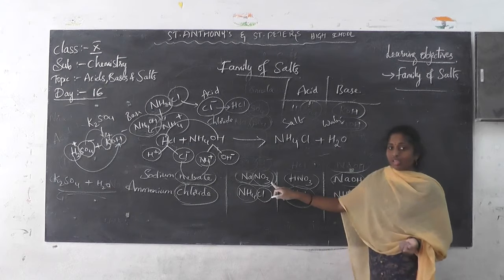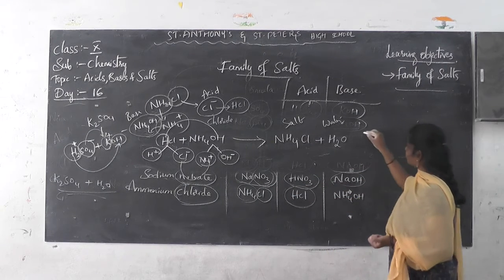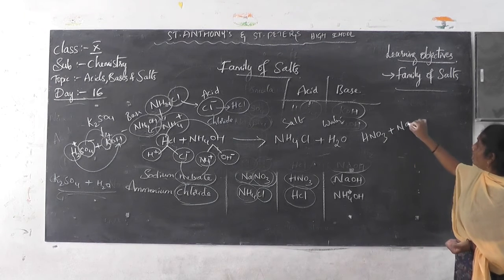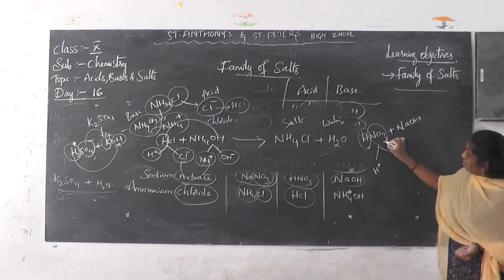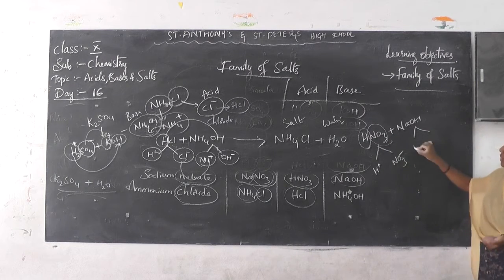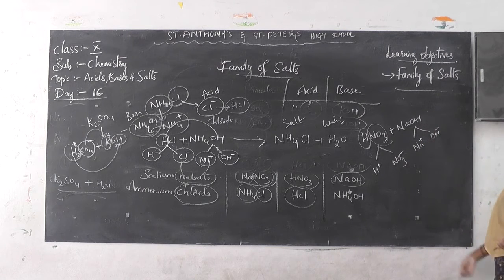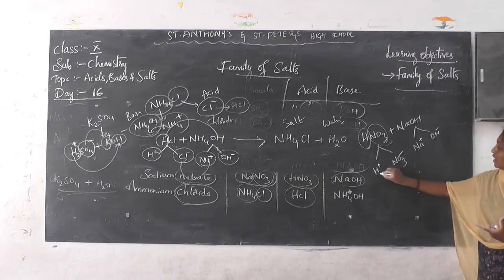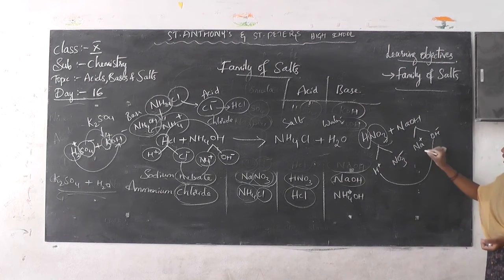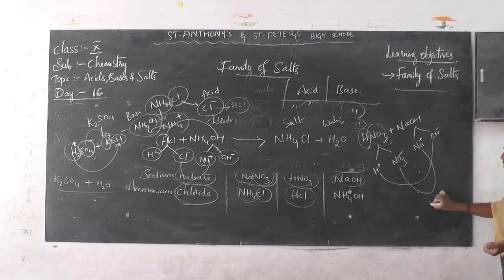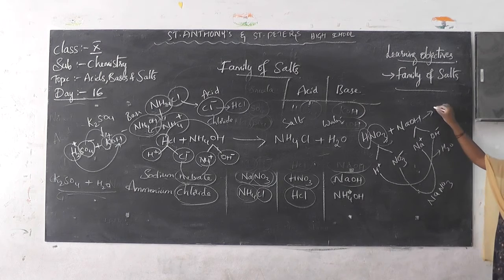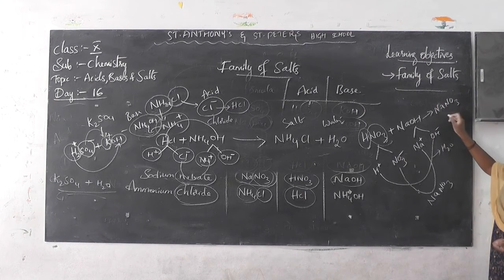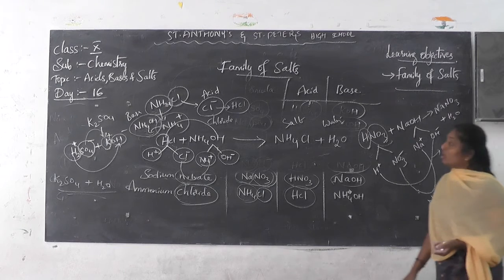Sodium nitrate — the formula is NaNO3. What is the acid? HNO3. It is reacting with NaOH. Splitting the particles: HNO3 gives H+ and NO3-; NaOH gives Na+ and OH-. Now combination — Na+ combines with NO3- to give NaNO3, and H+ combines with OH- to give H2O. So the product is NaNO3 plus water.